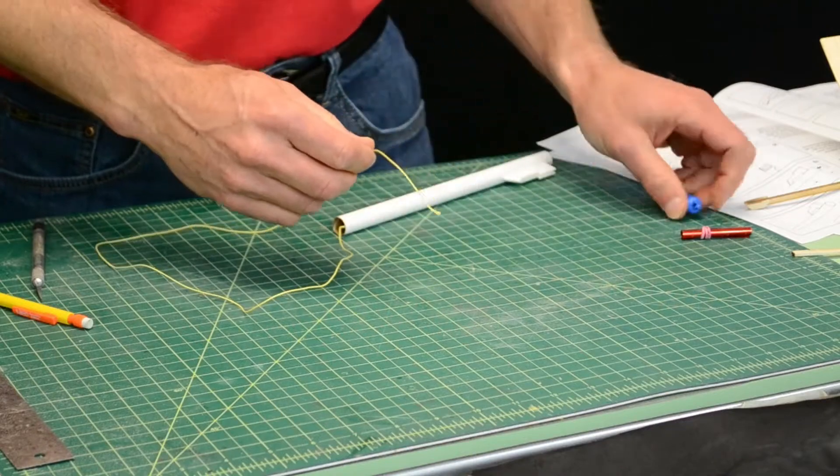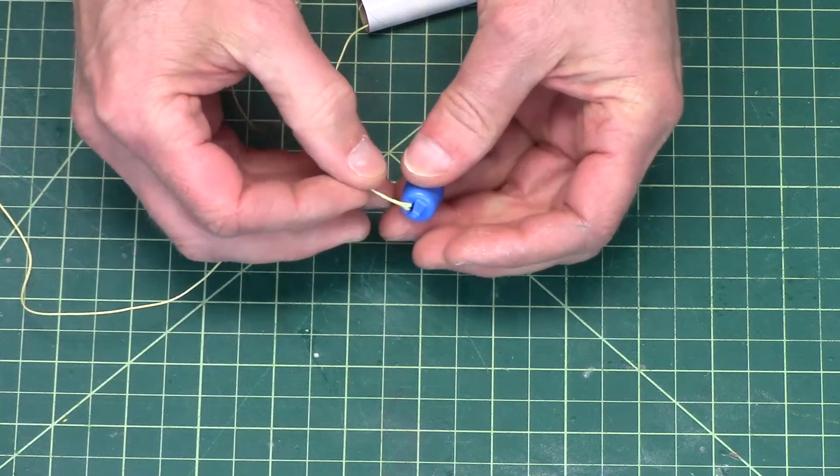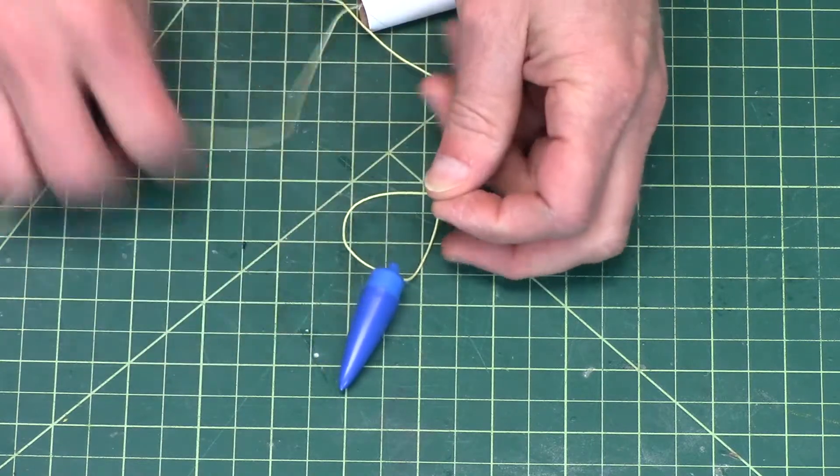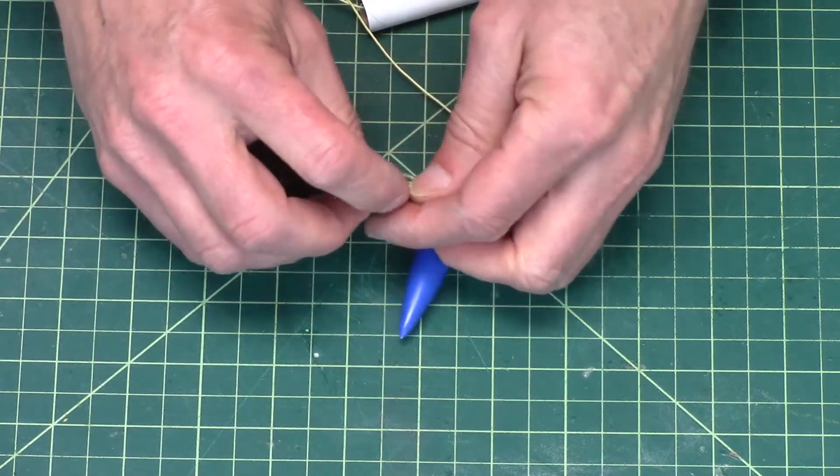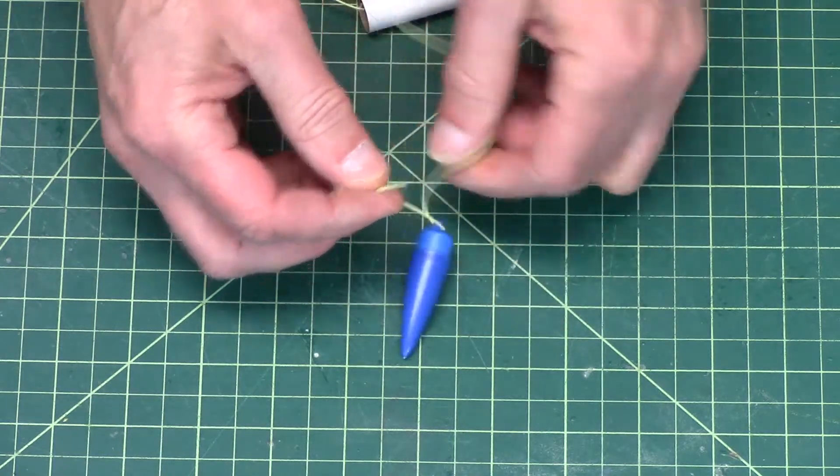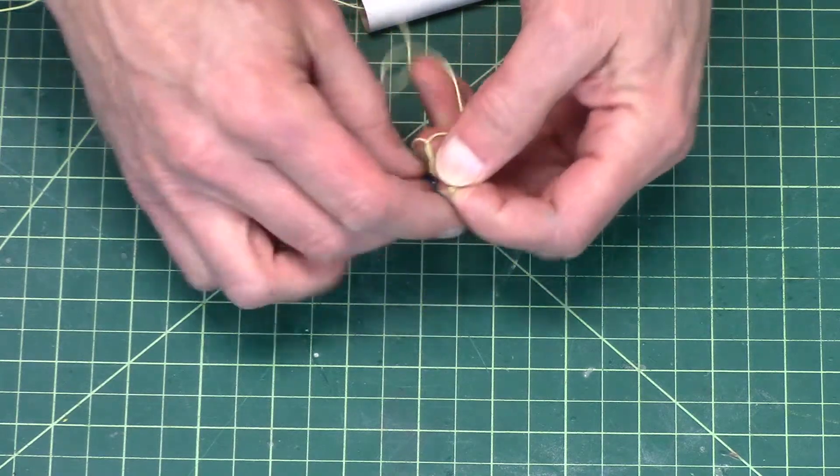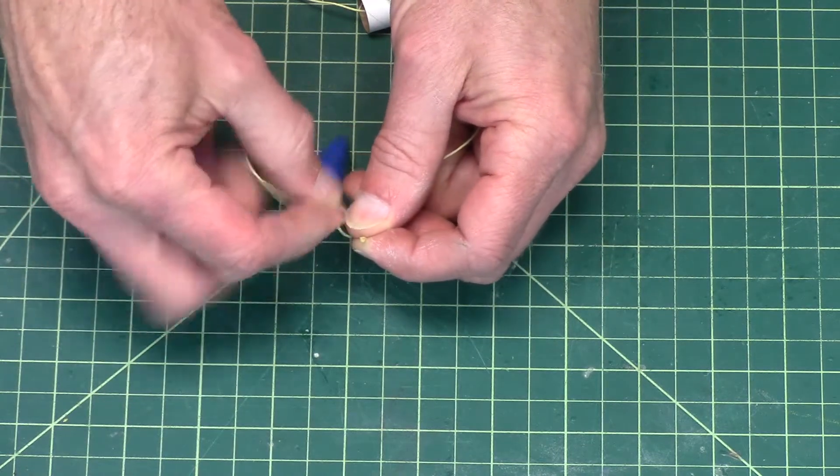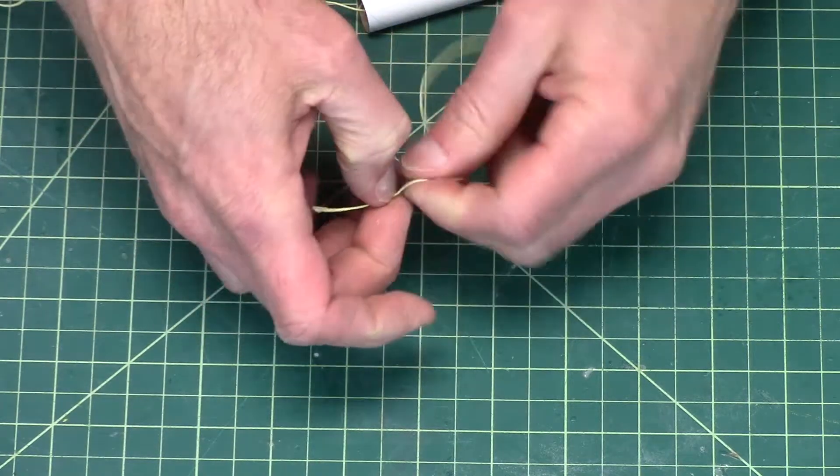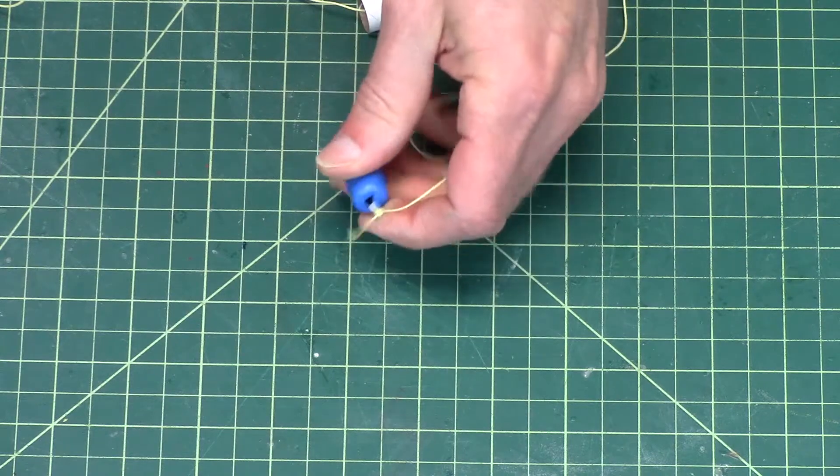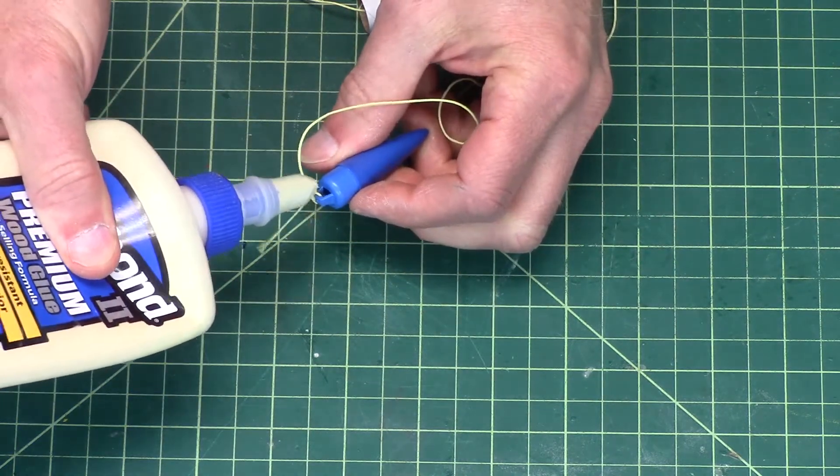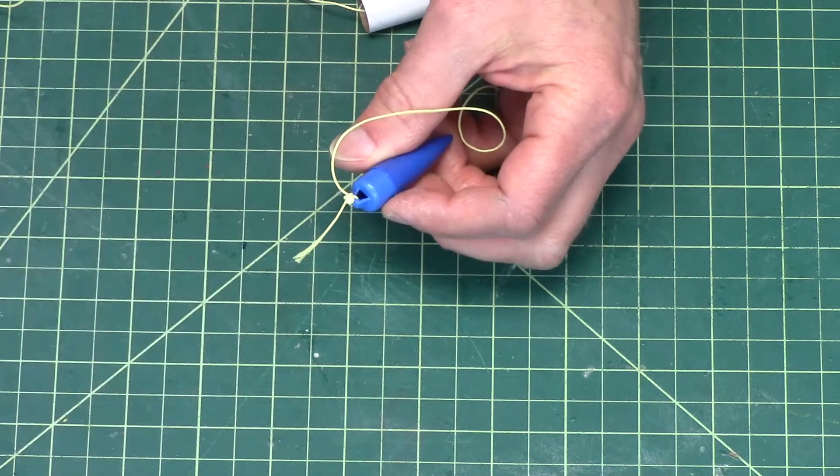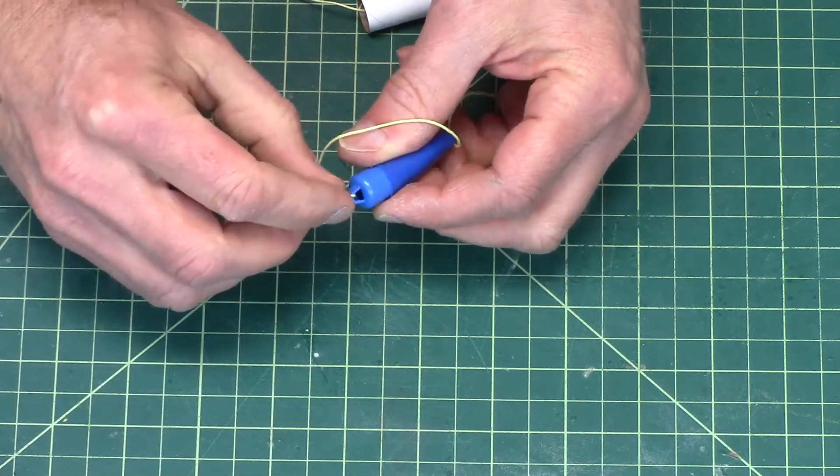But in the meantime, we can attach the other end to the nose cone and simply just tie it on. I like to use a slip knot myself, but you can use whatever knot you want. You can always put glue on the knot to make sure that it doesn't come undone. Just work it into the Kevlar like that.